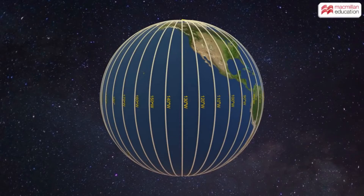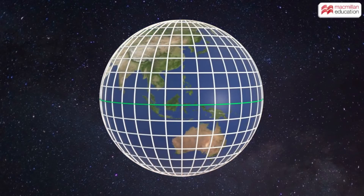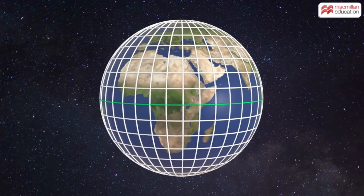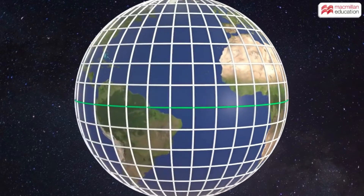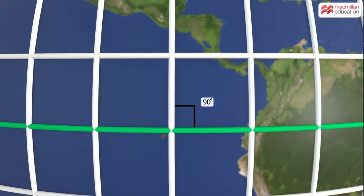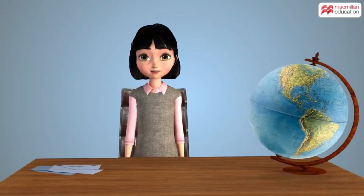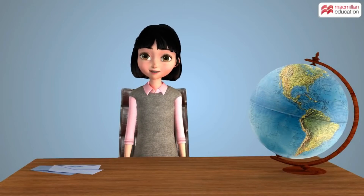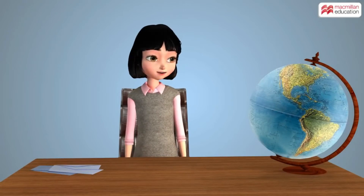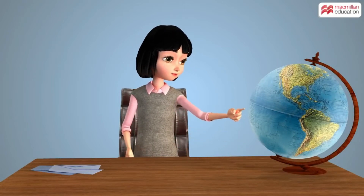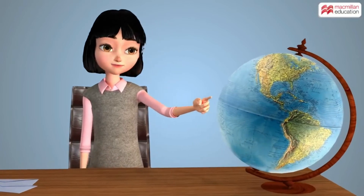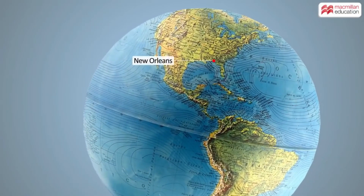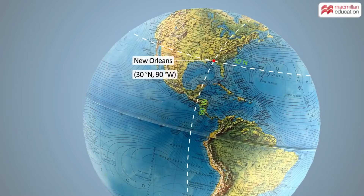Both the latitudes and longitudes form a grid in which they intersect each other at right angles. For locating a place on earth, you need to read the degrees of latitude and longitude. For example, the city of New Orleans is located at 30 degrees north and 90 degrees west.